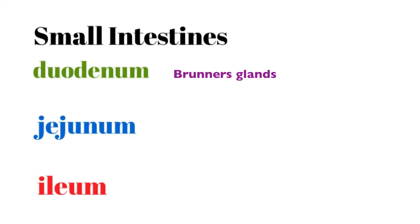The small and large intestine follow the same layers of the wall as outlined previously: the innermost layer is the mucosa, outside of that is the submucosa, then the muscularis externa with longitudinal and circular layers, and outside of that is the serosa. The ileum also contains structures known as Peyer's patches, which are congregations of lymphatic and immune cells.